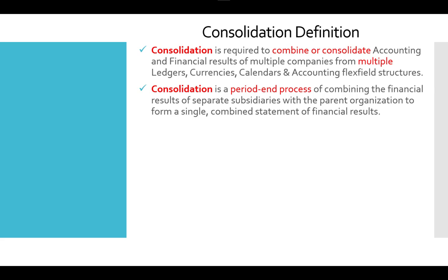Consolidation is the process of combining the financial results of separate subsidiaries with a parent organization to form a single combined statement of financial results. In cases where you have many ledgers with different currencies, calendars, and accounting flex field structures, you need to consolidate the accounting of all of them into one corporate ledger — whether they share the same chart of accounts or different ones, same calendar or different calendar. By the end, you need one parent ledger as a combined view of all financial data.